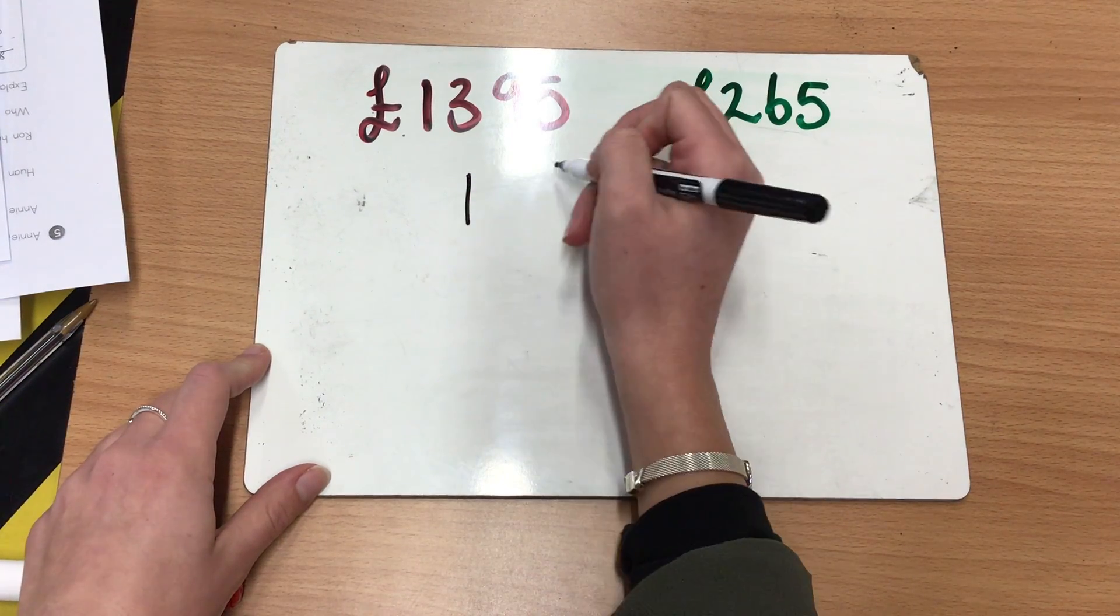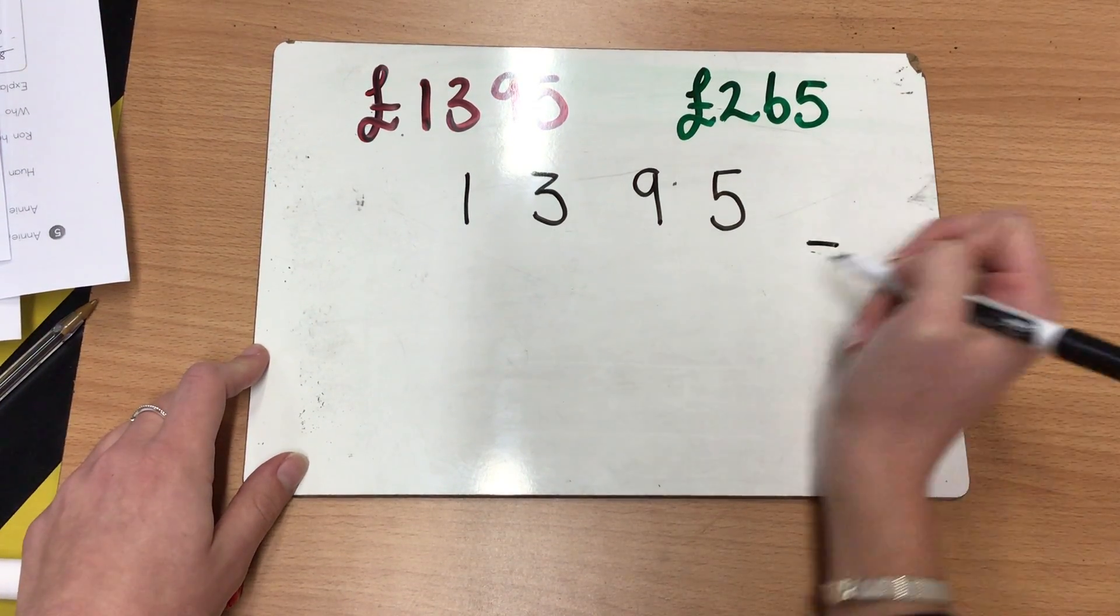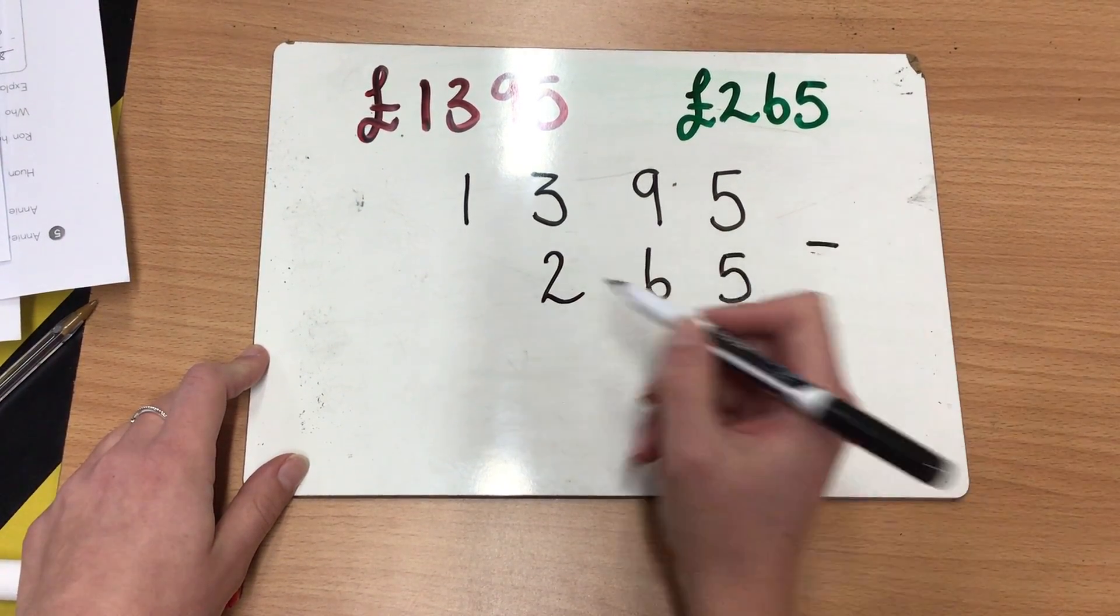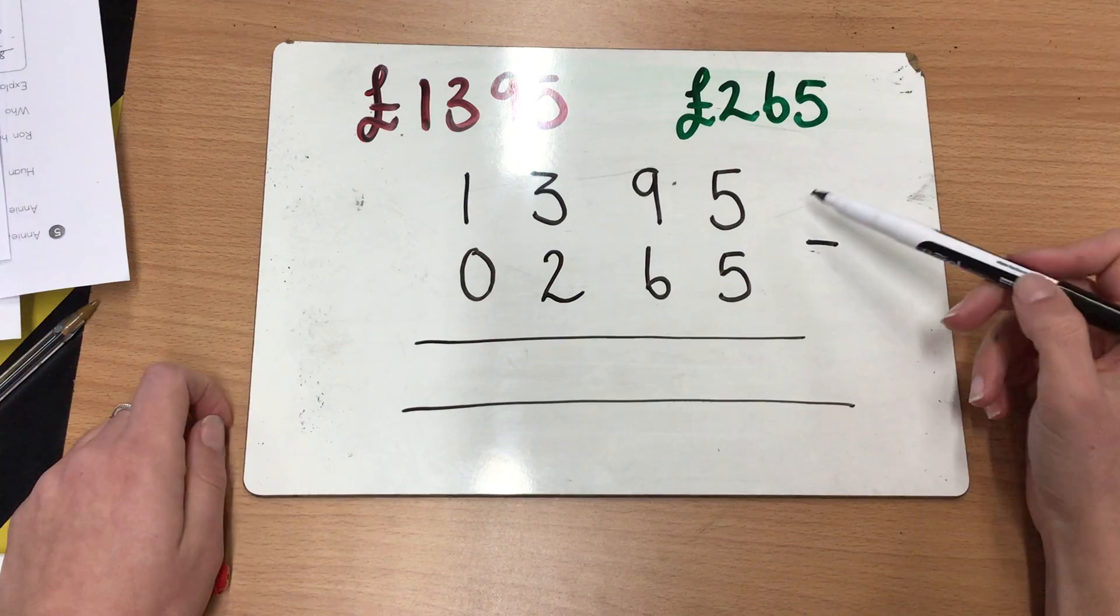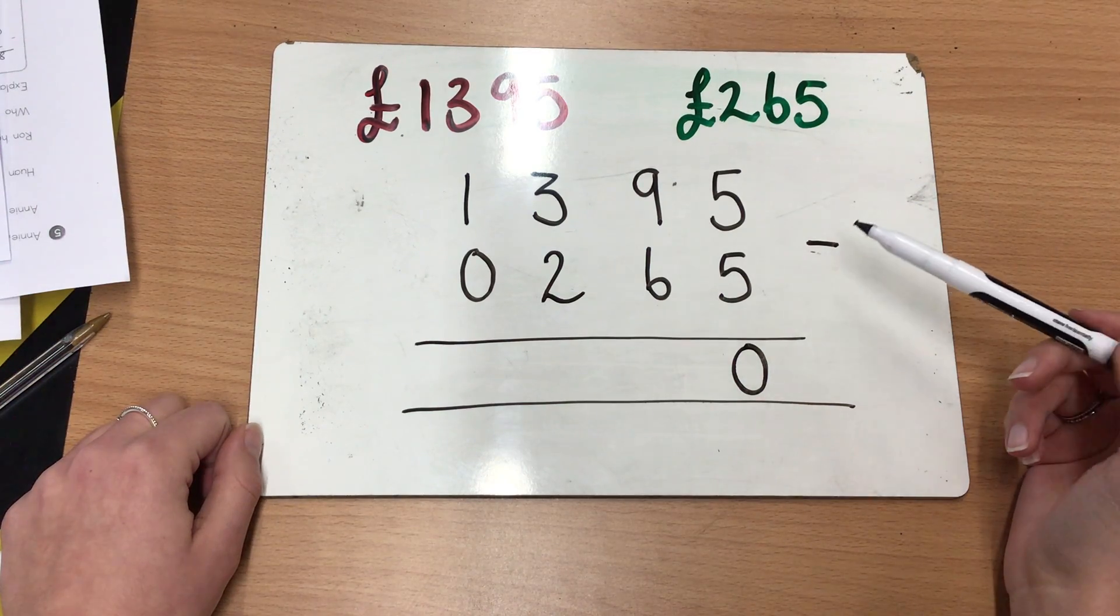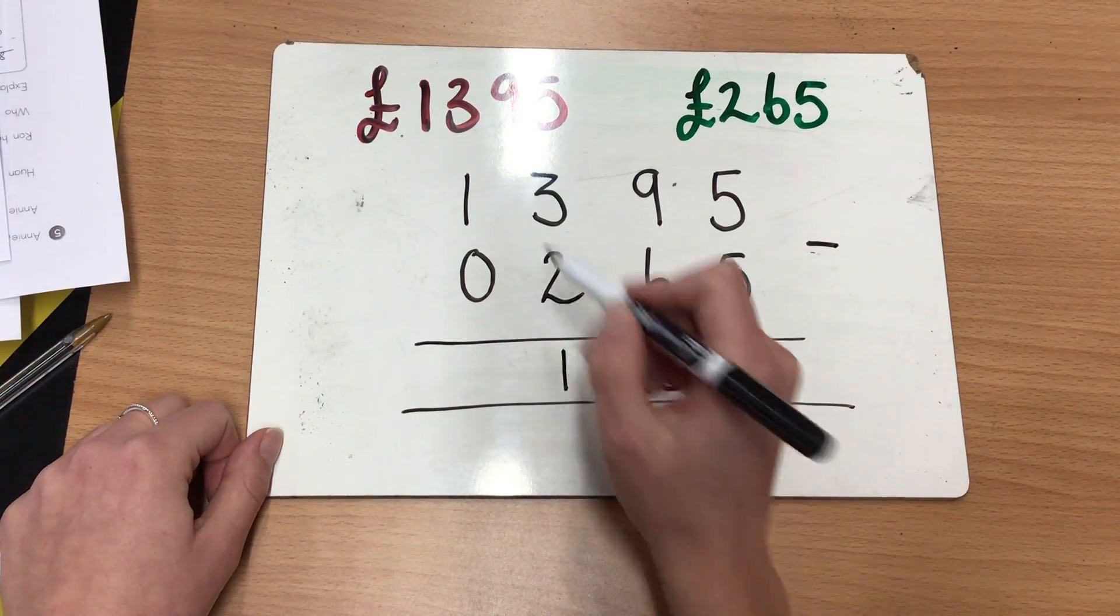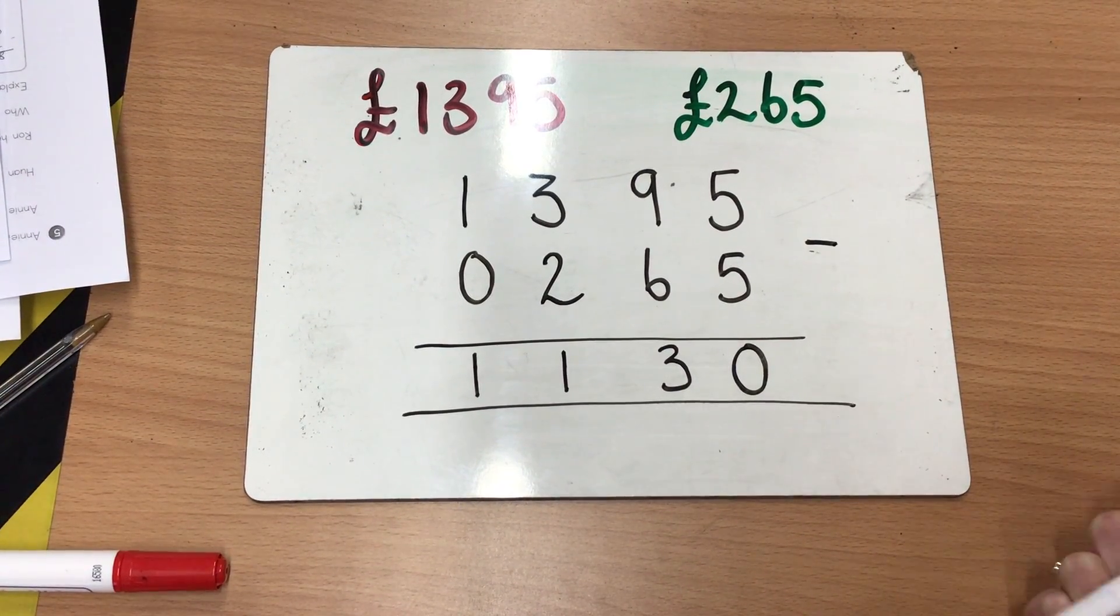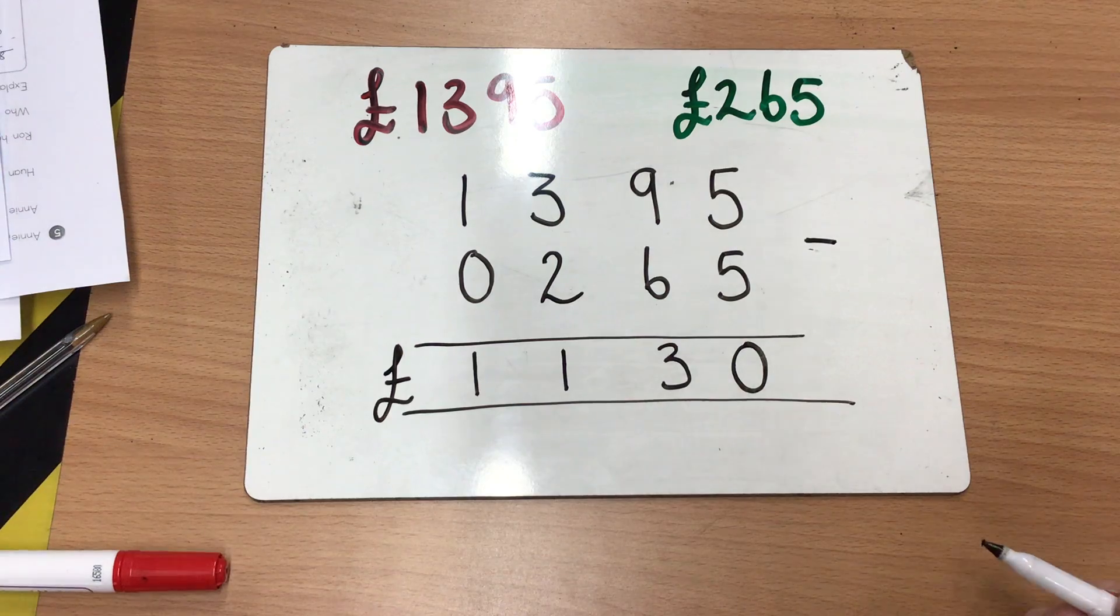So I'm going to set it out exactly the same as last time with my thousands, hundreds, tens, and ones. So I've got 1,395, take away 265, so there's nothing in my thousands column, 265. If you like, you can always put your place value holder in there. Same as last time, we're going to start with our ones column. Five take away five would leave us with zero. Nine take away six would give us three. Three take away two would give us one. One take away zero would give us one. So we didn't have to do any renaming in there. We could easily subtract all of those. So the answer to question A is that the bracelet costs £1,130 more than the earrings.